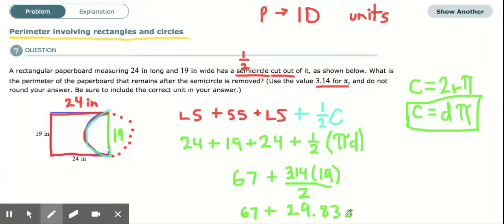So let's go ahead and add these up. And we get 96.83. And remember in the beginning we said it's just units because we're just measuring the distance around. It's not units squared. So this is in terms of inches. So the perimeter is 96.83 inches.